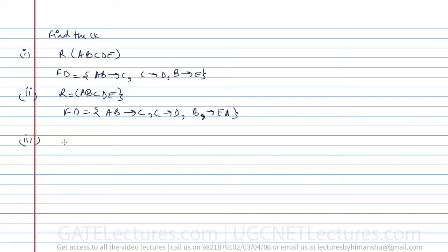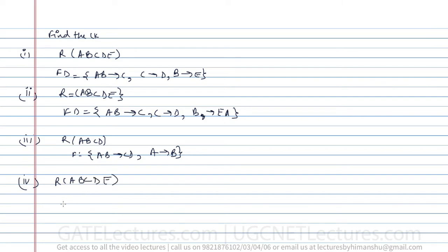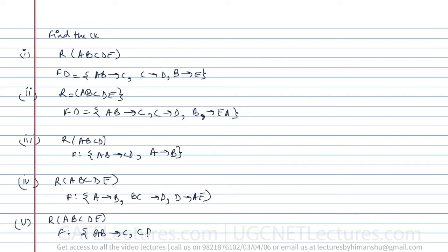Question three: the relation is R(A,B,C,D) and the functional dependencies are AB→CD and A→B. Question four: the relation is R(A,B,C,D,E) and the functional dependencies are A→B, BC→D, and D→AE. Question five: the relation is R(A,B,C,D,E) and the functional dependencies are AB→C, CD→E, and DE→B.